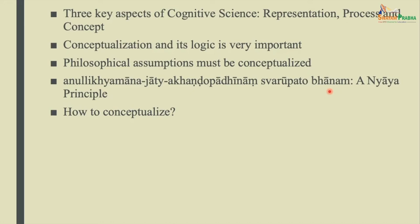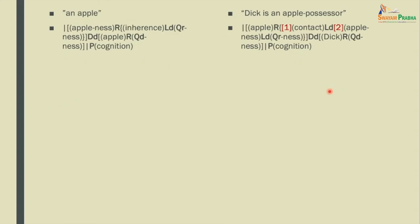How to conceptualize this principle? A rough translation: a universal — something like potness or potness-ness — is an abstract property. When a universal is not mentioned verbally in the verbalization of a cognition, it auto-appears in that cognition. This means something very significant, and we will try to explore that significance. We split this issue into two questions and try to answer them.